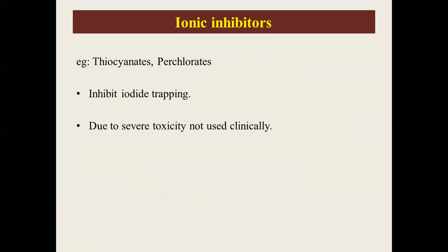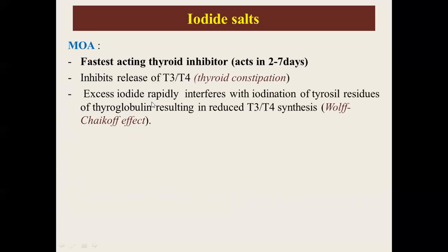The next class is ionic inhibitors, which include thiocyanates and perchlorates. These inhibit iodide trapping — the first step in thyroid hormone synthesis. However, due to high toxicity, they are not used clinically.